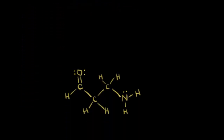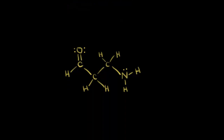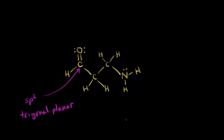Let's do one more example. Our goal is to find the hybridization states and geometries for all atoms except hydrogen. Let's start with this carbon right here. The fastest way is to notice that there's one double bond to that carbon, so it must be sp2 hybridized, and therefore the geometry is trigonal planar. Using steric number: there are three sigma bonds around that carbon — one here, one here, and one from the double bond — plus zero lone pairs, giving a steric number of three. That confirms sp2 hybridization.